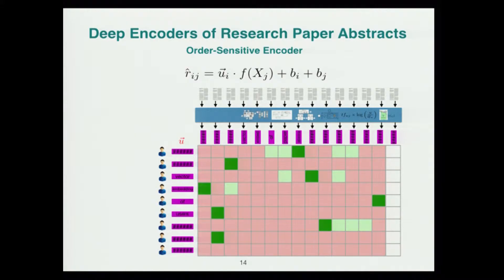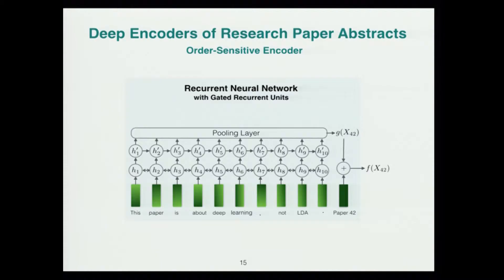Coming back to text recommendation, the idea is to have a feature encoder that learns an order-sensitive representation of the text for recommending items. We use a layered RNN with gated recurrent units. The first layer is bidirectional — a forward and backward RNN whose hidden representations at each token are concatenated and fed to the second layer. The final layer's hidden representations are pooled using average pooling to obtain a text representation g. We also keep a paper-specific embedding added to this to obtain the final embedding f, which is only present during warm-start scenarios.